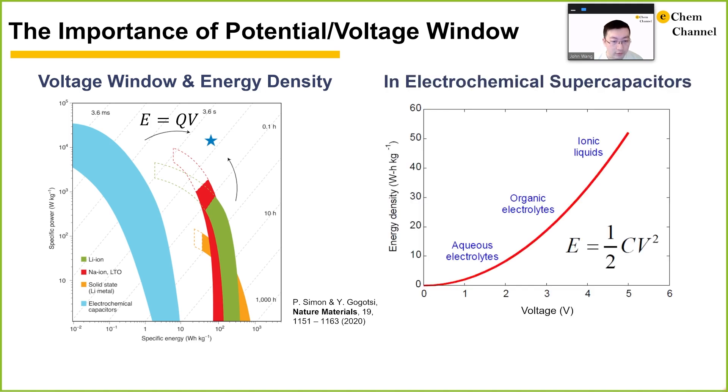The voltage window is even more relevant in electrochemical supercapacitors where energy is proportional to the square of the voltage. In supercapacitors that do not involve redox reactions, electrode materials like carbon often have wider stability windows than electrolytes. This makes extending the voltage window of supercapacitors primarily a task of seeking electrolytes with wider stability windows.